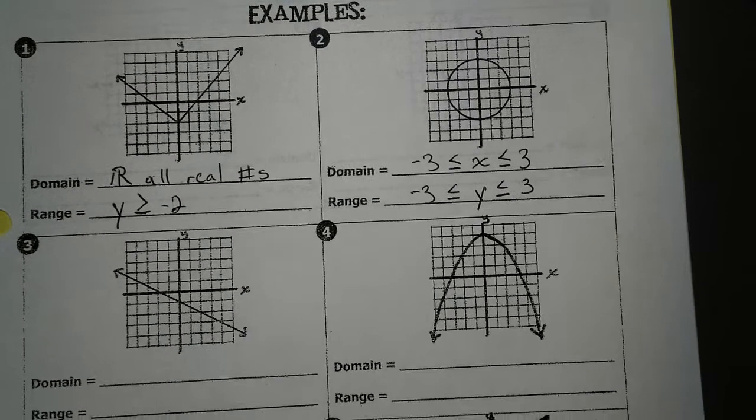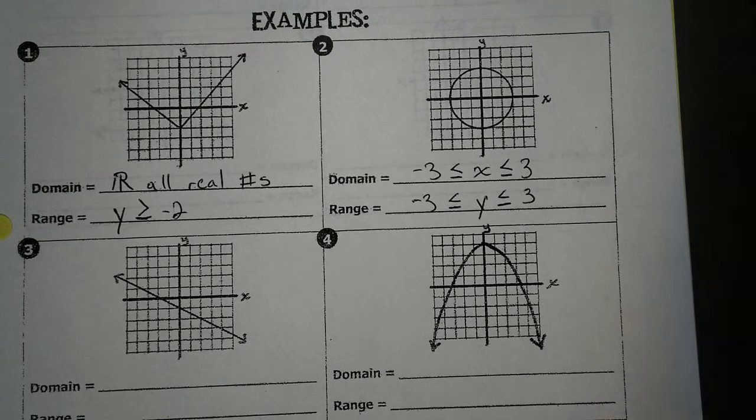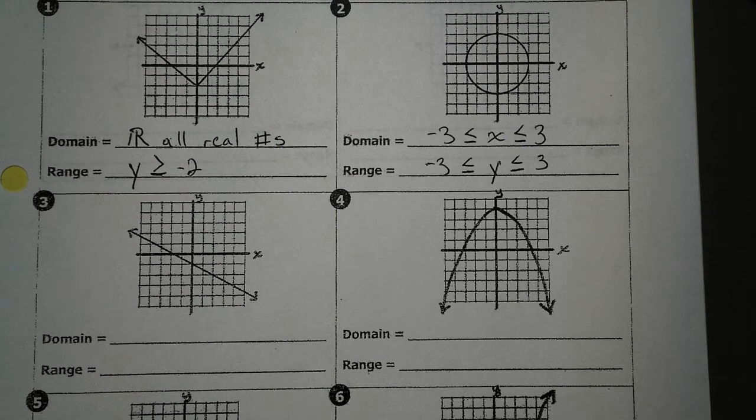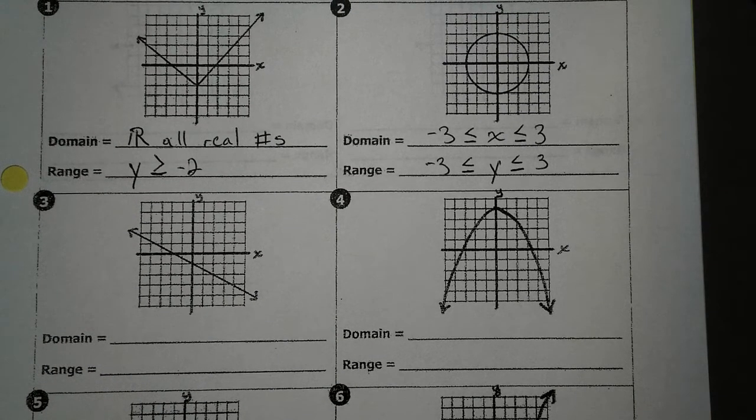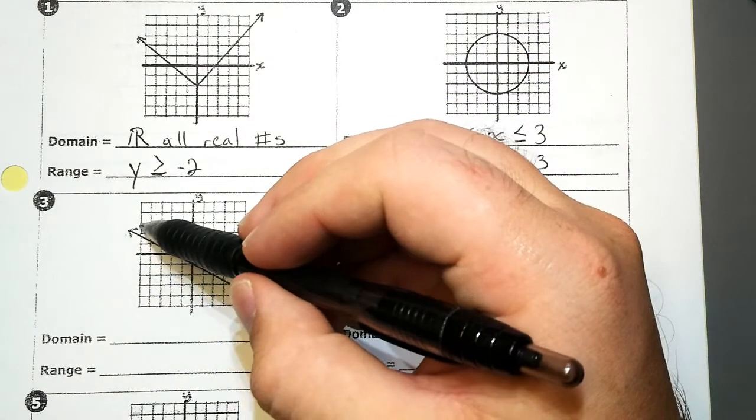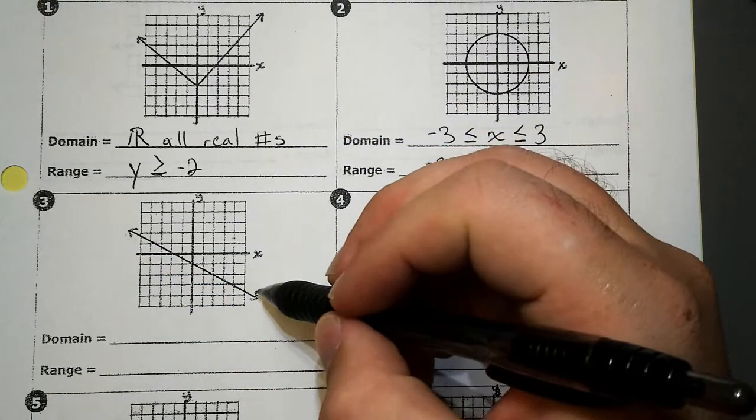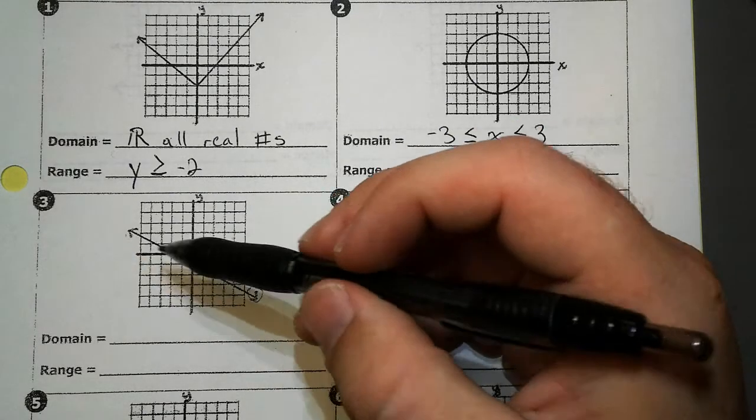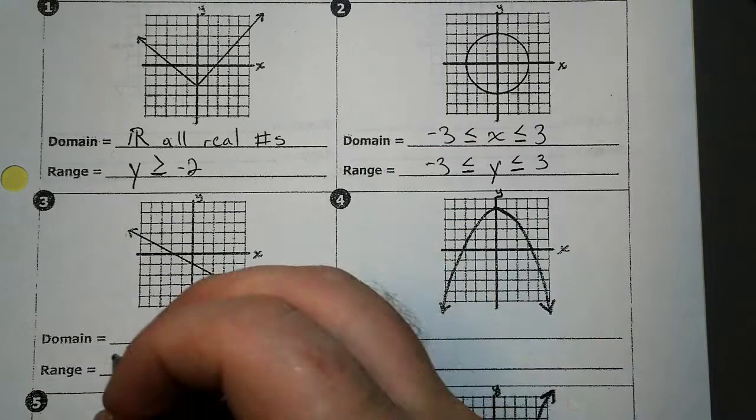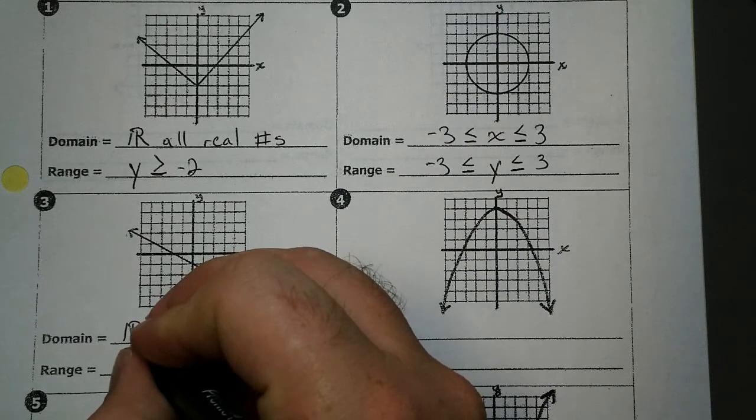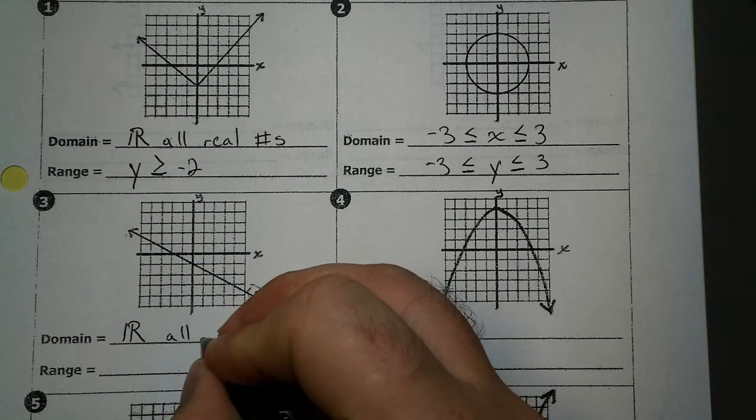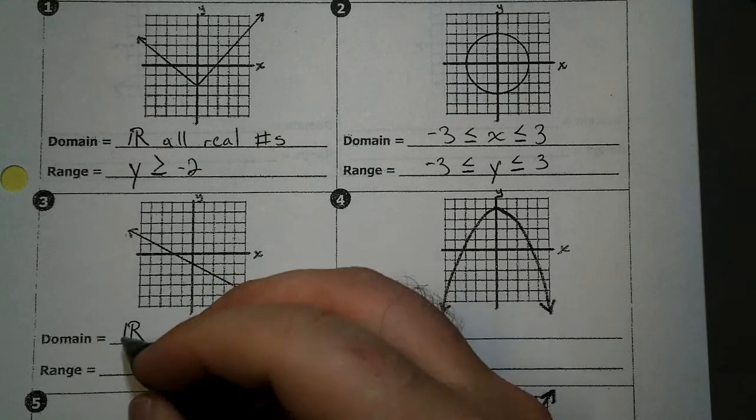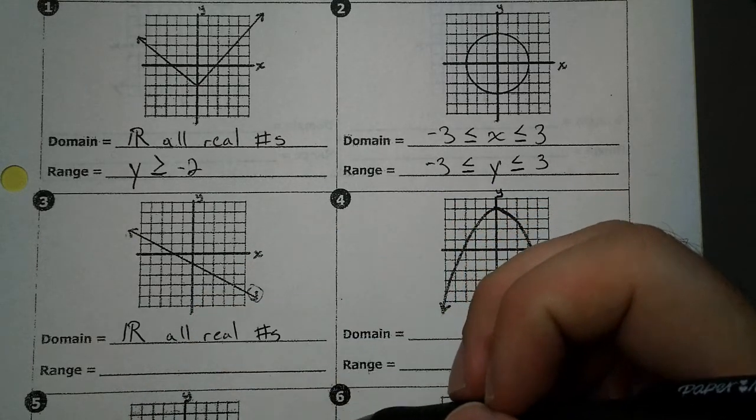All right, let's look at number three now. On number three, if you look, we do our domain first. Let's go left to right. What's on the left side? An arrow. What's on the right side? An arrow. Whenever you see that it continues forever, it doesn't stop, then you know it's all real numbers. If you're having trouble making this symbol, just write out all real numbers and that'll be fine.